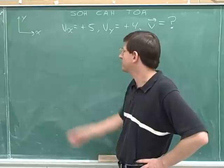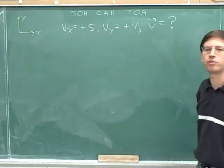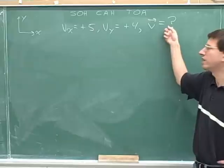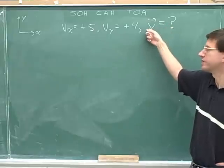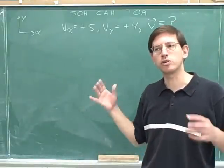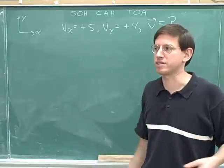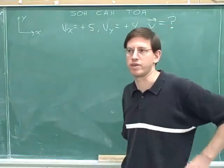Here's our next problem. We're given that v sub x is positive 5 and v sub y is positive 4, and the question is, what is the overall vector? Determine the overall vector. Please pause the video and give that problem a shot. Don't spend too long on it because we haven't done any examples of those together. So if you get stuck, restart the video and we'll go through that together.